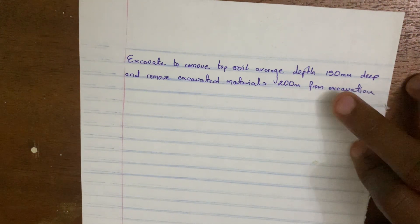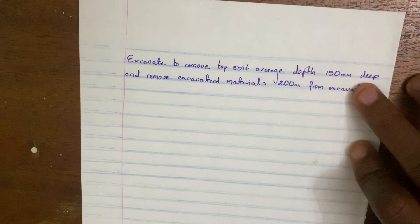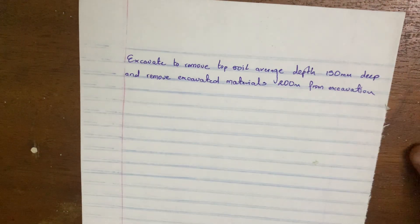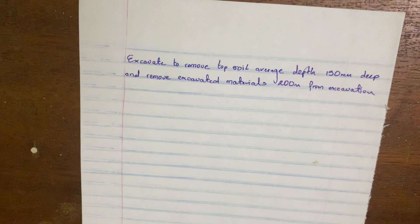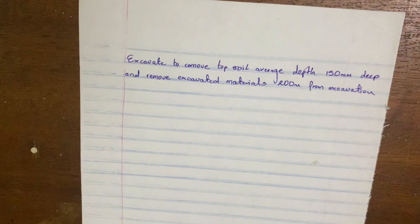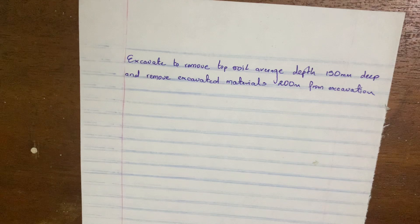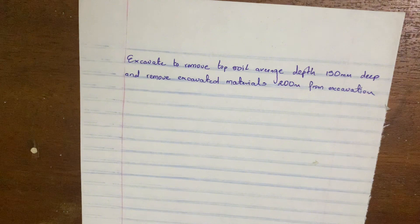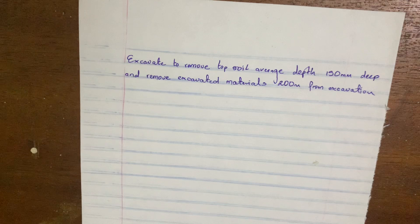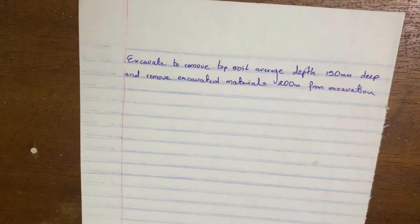We'll imagine that this is what we described in our taking-off sheet: 'Excavate to remove topsoil, average depth 150 mm deep, and remove excavated material 200 meters from the excavation.' The first thing you're going to be asking yourself is how long it takes one person to excavate one meter square of this topsoil — noting that the unit for measuring topsoil as stated in our BSM is meter square.